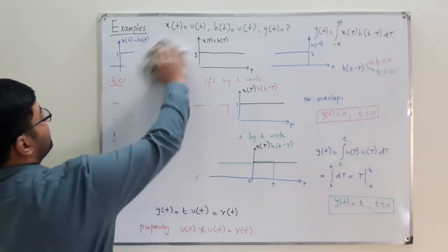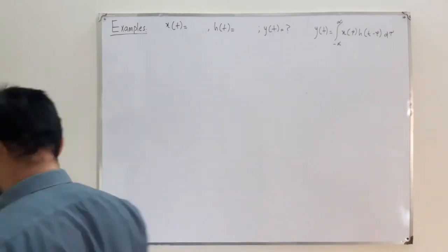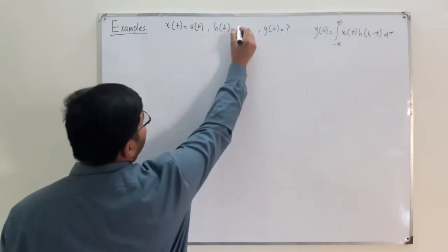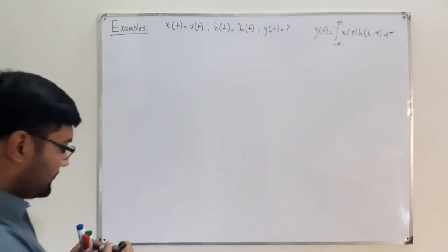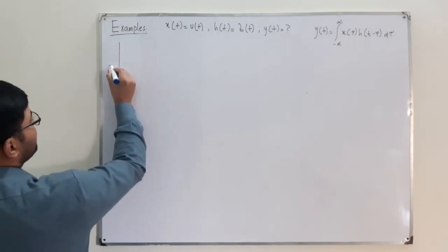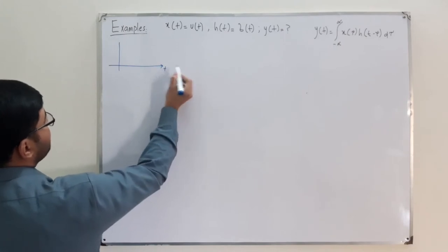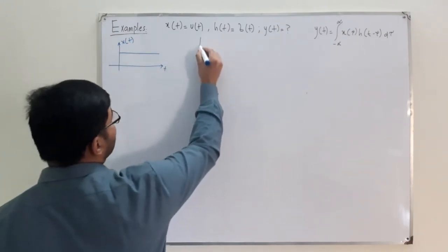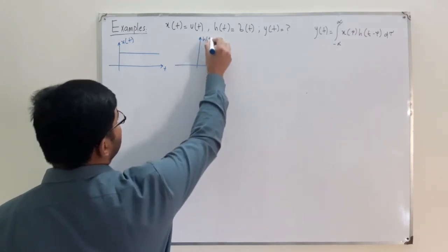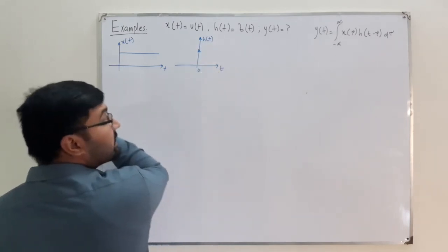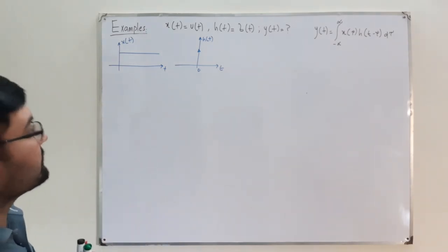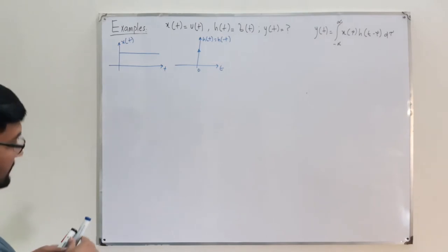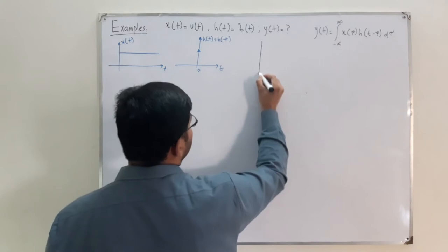Now for Example 2. We have x(t) = u(t), and h(t) is now the impulse function δ(t), and y(t) is unknown. Following the same steps: x(t) is a unit step, and h(t) is an impulse at t = 0. Changing the variable, x(τ) = u(τ), and h(τ) = δ(τ).